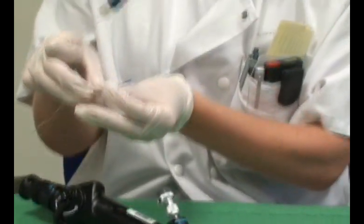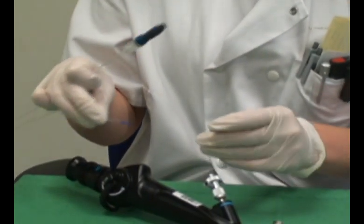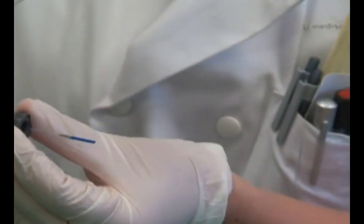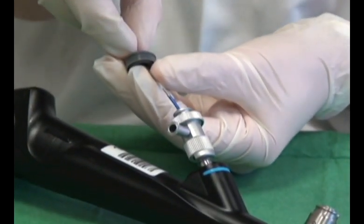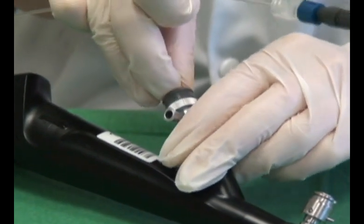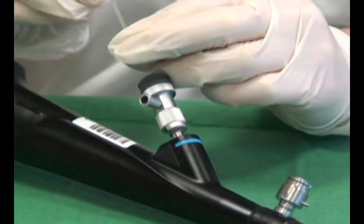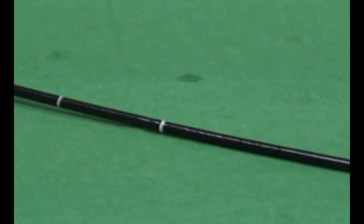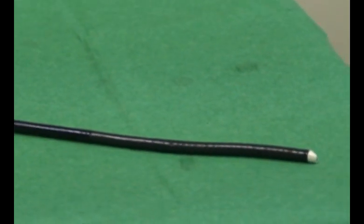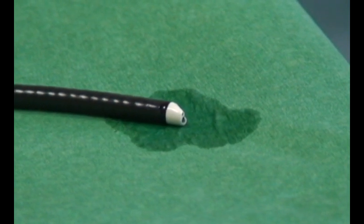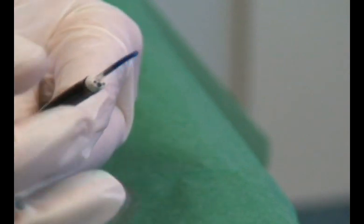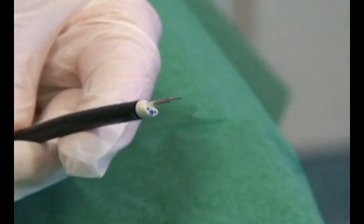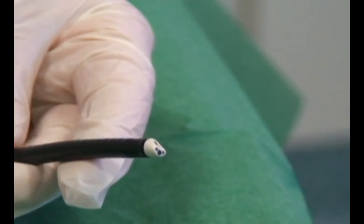The needle is inserted with its cap, first through the adapter, then through the working channel of the cystoscope. The adapter is then connected to the working channel to maintain water tightness. When it reaches the end of the scope, the cap is removed and the needle slightly retracted into the scope. The system comprising of the cystoscope and the needle is now ready for use.